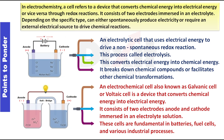In electrochemistry, a cell refers to a device that converts chemical energy into electrical energy or vice versa through redox reactions. It consists of two electrodes immersed in an electrolyte. Depending on the specific type, it can either spontaneously produce electricity or require an external electrical source to drive chemical reactions. An electrolytic cell uses electrical energy to drive a non-spontaneous redox reaction. This process, called electrolysis, converts electrical energy into chemical energy, breaking down chemical compounds or facilitating other chemical transformations.